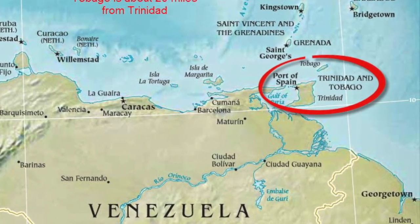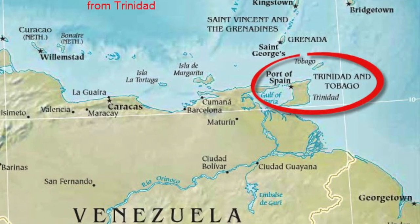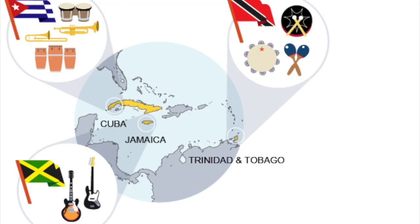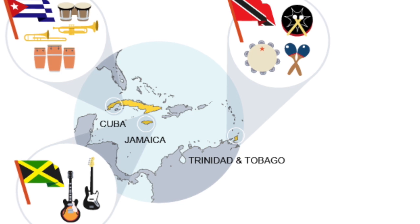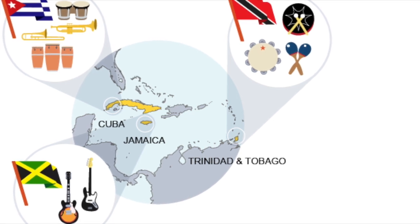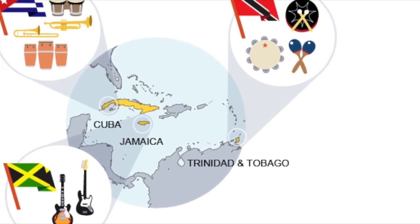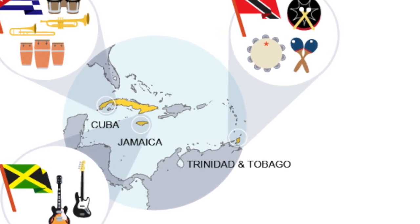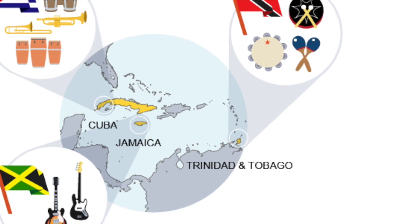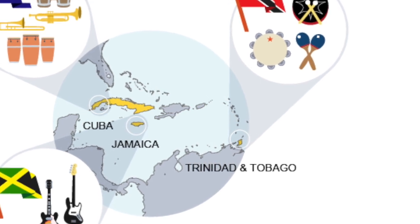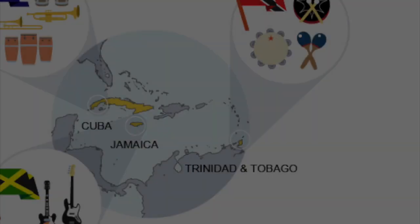The Caribbean islands lie in a chain from the Bahamas in the north to Trinidad and Tobago in the south. Central in the chain are the largest islands of Cuba, Haiti, the Dominican Republic, Jamaica, and Puerto Rico.